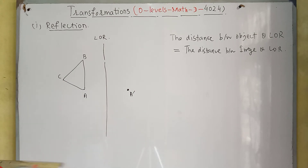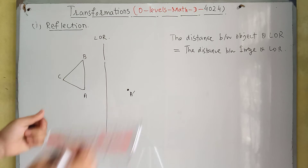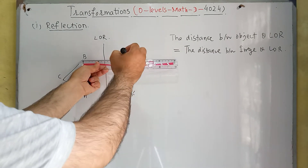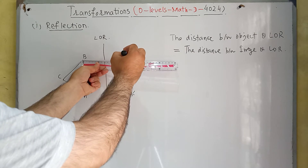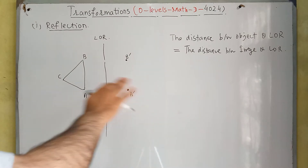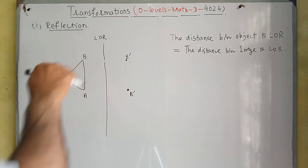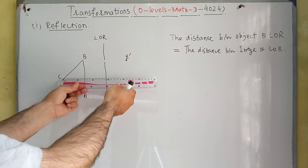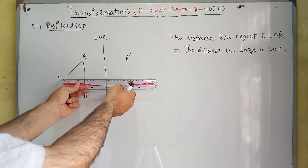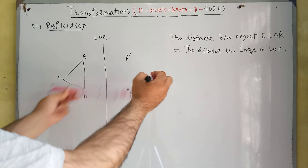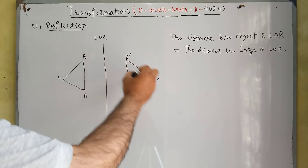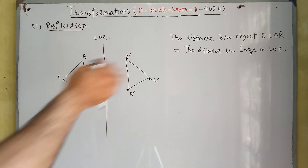Similarly, we will find the image of point B. Again the distance is seven, so we will have B-dash here. Now look at the distance of C from the line of reflection — it is 14 centimeters, so at the other side it will also be 14 centimeters. Now we will join A-dash, B-dash and C-dash. So this is the reflection of triangle ABC — this shape is the object and this shape is the image.